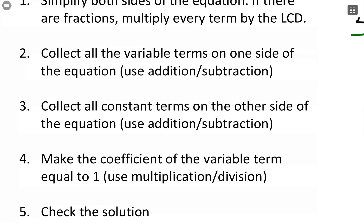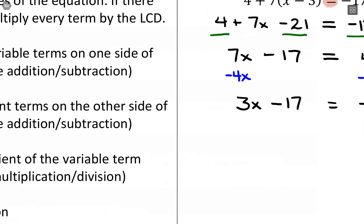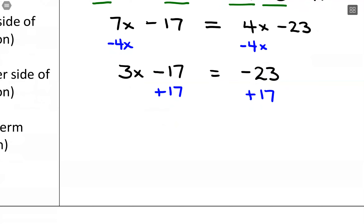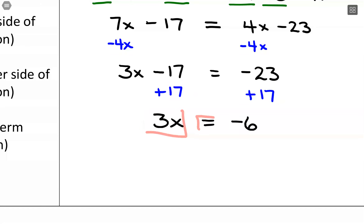Step 3: collect all constant terms on the other side of the equation — any plain numbers, we want to move those to the other side. This whole process is about isolating x. Right now, negative 17 is being subtracted, so I need to move it away. The opposite of minus 17 is positive 17, so I add 17 to both sides. That leaves 3x alone on the left, equals negative 23 plus 17, which is negative 6.